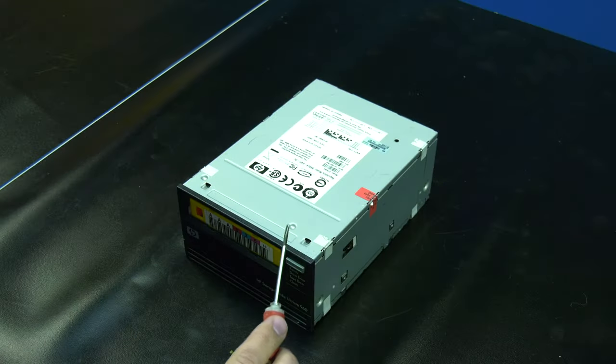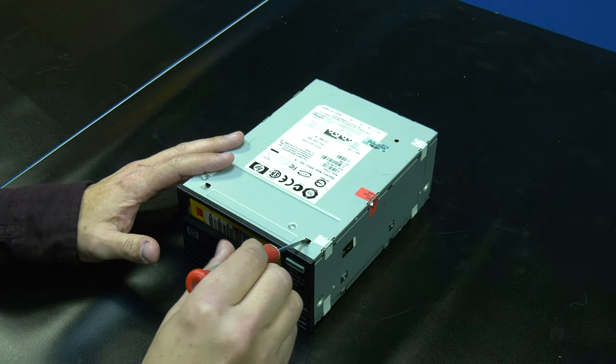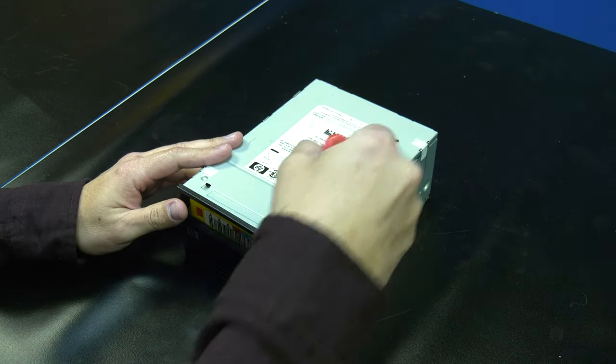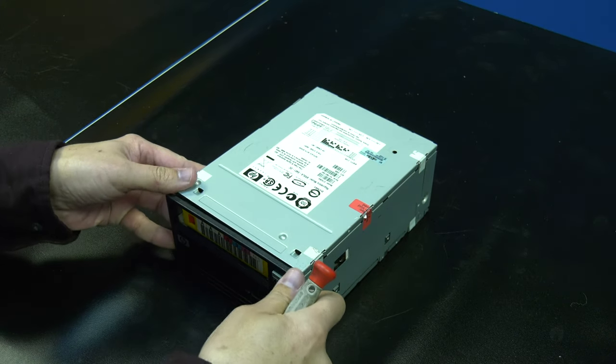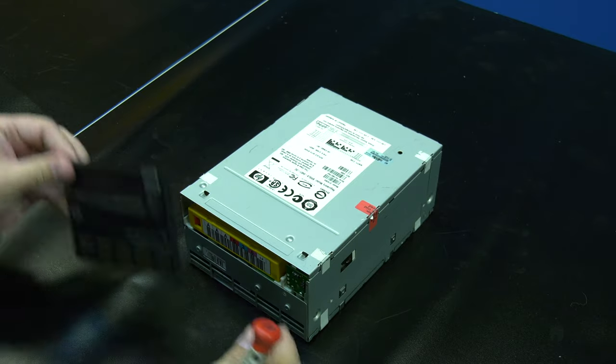You will start by using a small screwdriver to remove the faceplate, if there is one installed, from the front of the drive. Use the screwdriver to release the top two internal clips for the faceplate, and then carefully pull the faceplate off and set it to the side.